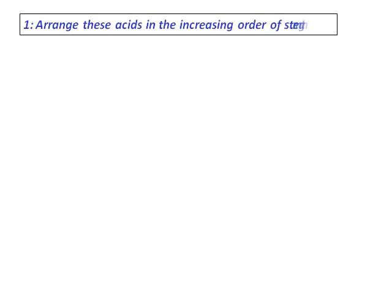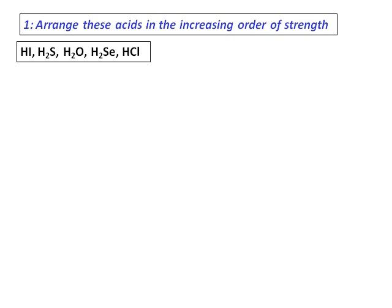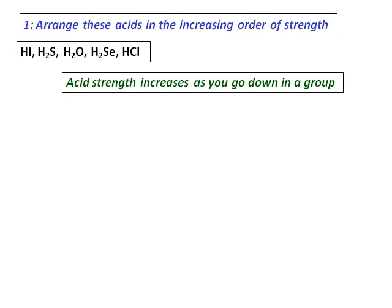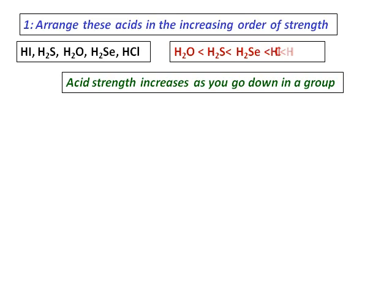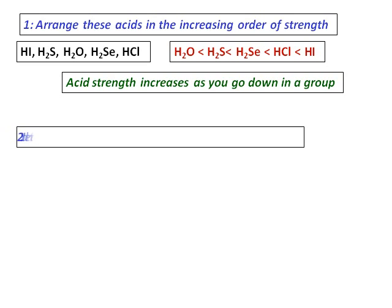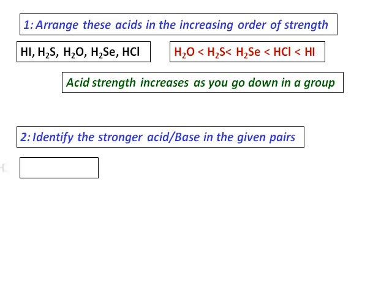Let's do some questions. First, arrange HI, H₂S, water, H₂Se, and HCl in increasing order of acid strength. The rule is acid strength increases as you go down in a group, so water is the least acidic and HI is the strongest. Second, identify the stronger acid in given pairs: HClO₄ vs HClO₂ — these are oxoacids, so larger oxidation state of the central atom means stronger acid, therefore HClO₄ is the answer.